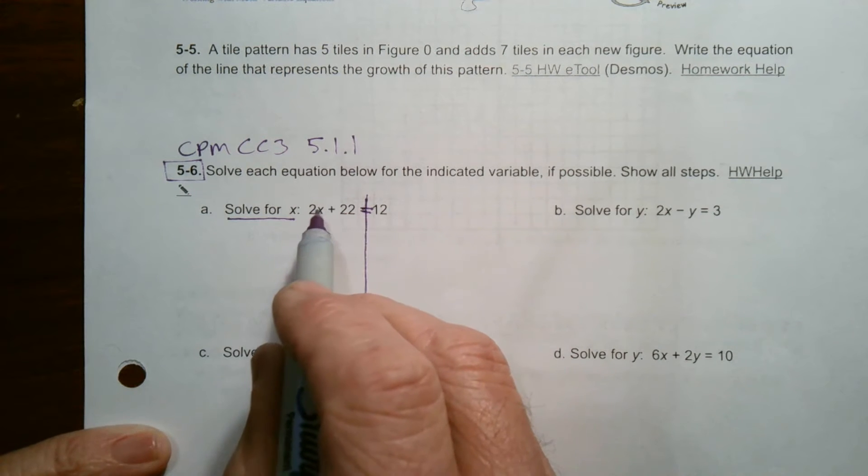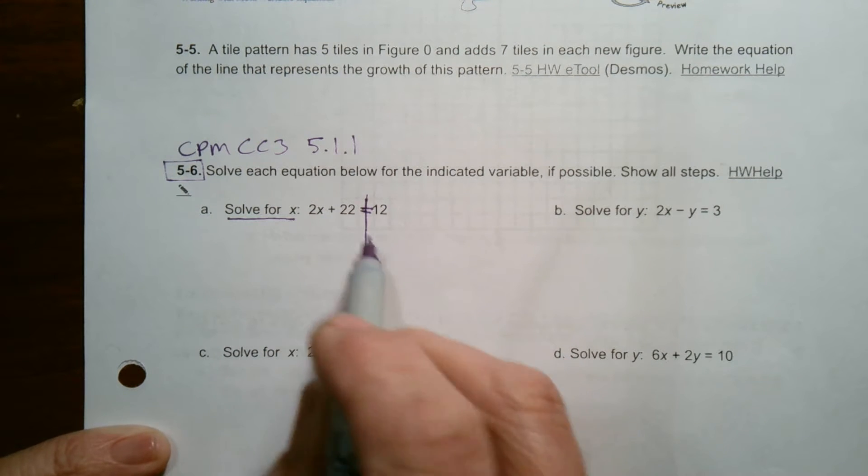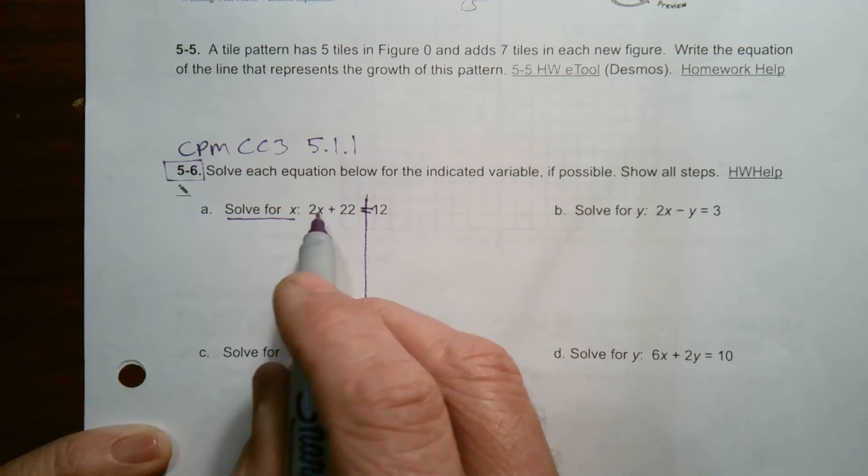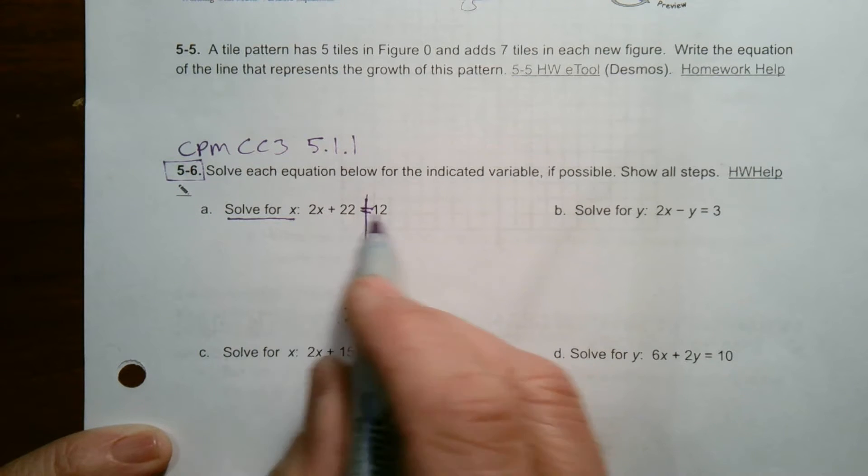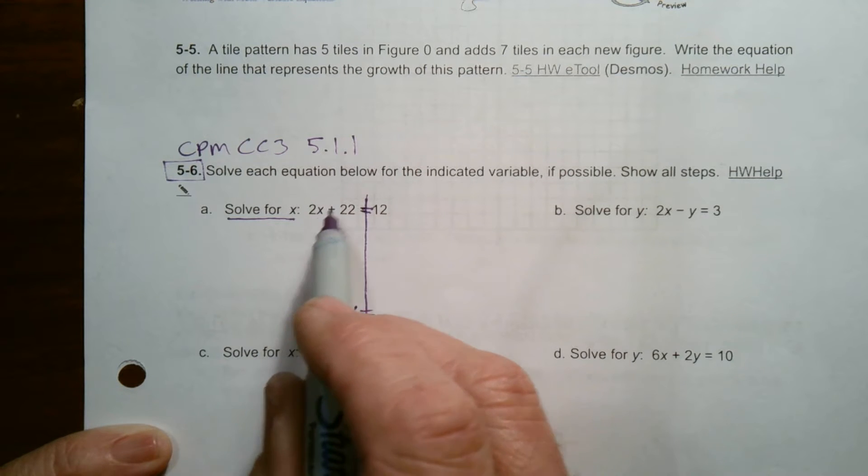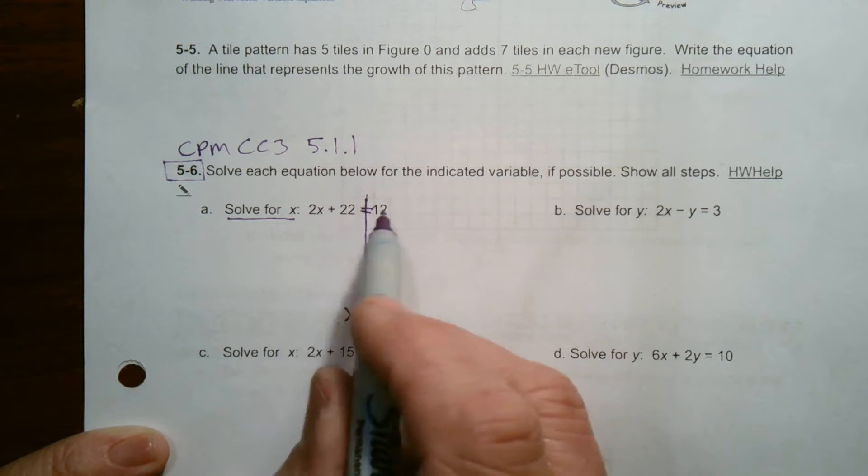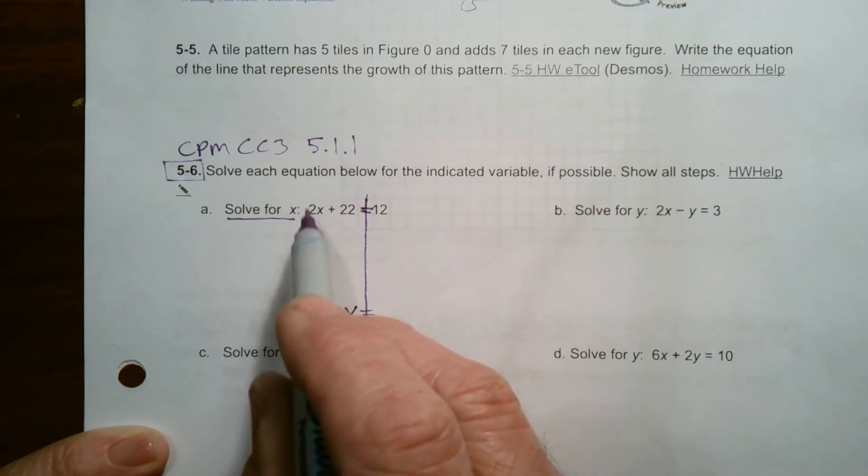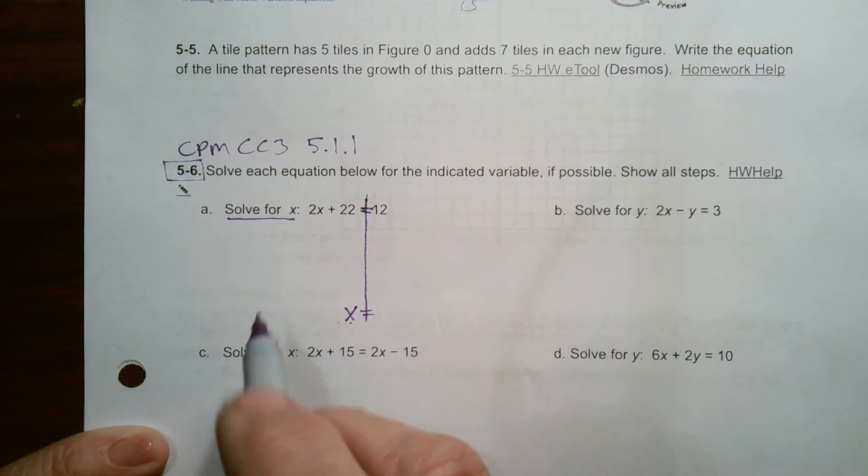In this case, there's only an x term and the rest are all integers. So really we will get a number as an answer. There's some value of x that makes this equation true. You could probably even look at this. Two times something plus 22 is 12. So you may even be able to play the guess and check game to determine what that number is.